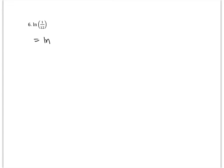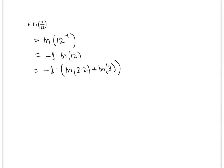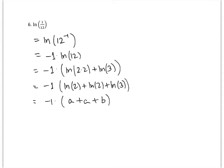Finally, we've got natural log of 1/12. I'll write this as 12 to the minus 1 and bring down that power, giving negative 1 times the natural log of 12. Now 12 is 2 times 2 times 3, so we break that into natural log of 2 plus natural log of 2 plus natural log of 3, which is a plus a plus b, or 2a plus b. Distributing the negative 1 gives negative 2a minus b. We may need to remember those log rules in various situations, so this is a good exercise.